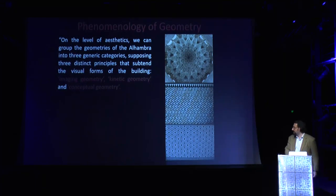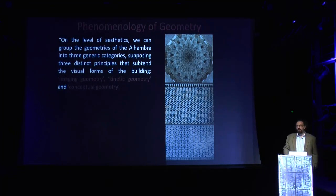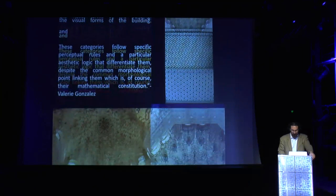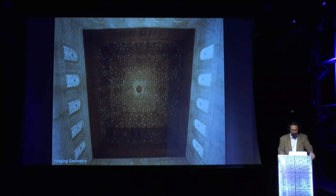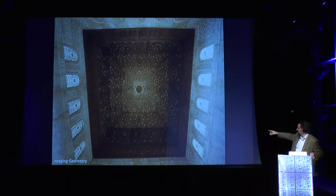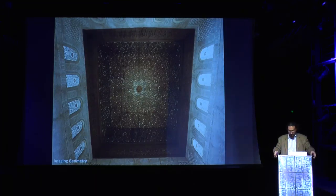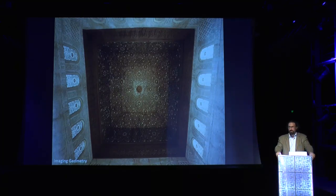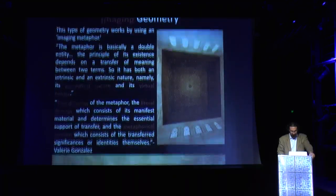Phenomenology provides Gonzalez with a useful tool to distinguish three different kinds of geometries in the Alhambra: the imaging kind of geometry, the kinetic geometry, and the conceptual geometry. Imaging geometry is the kind that produces or generates an image. Looking at the Comares Hall, beneath which are verses describing the seven heavens, scholars for a brief period thought the dome represented the heavens, but we now know the aesthetic system operating here is not one of representation but something entirely different.